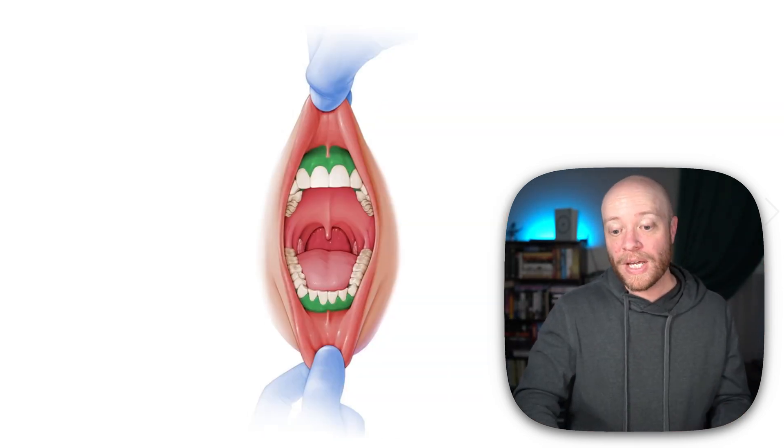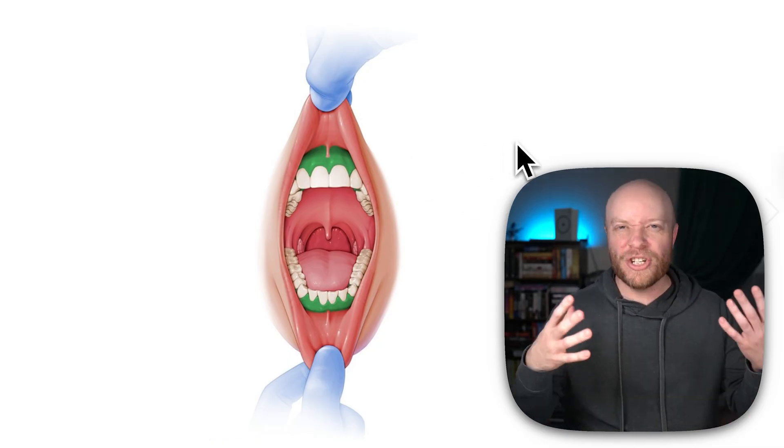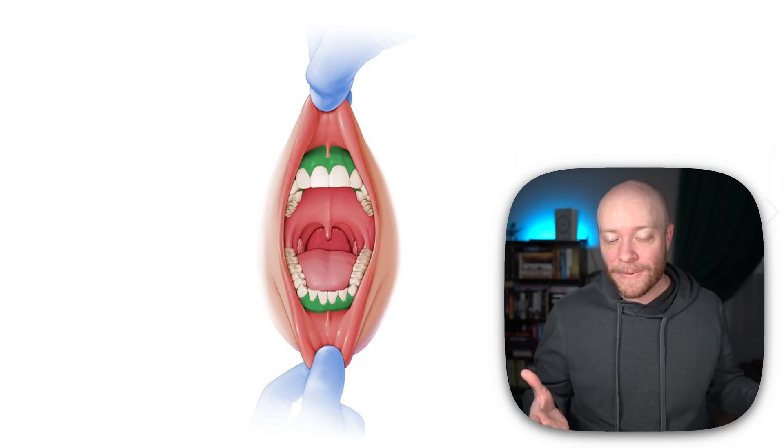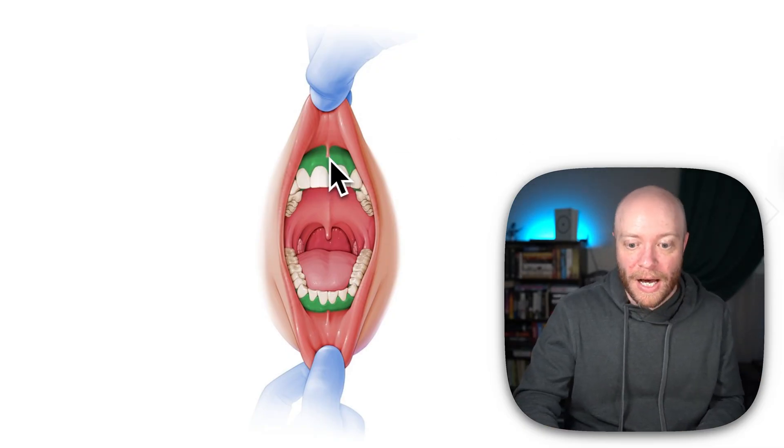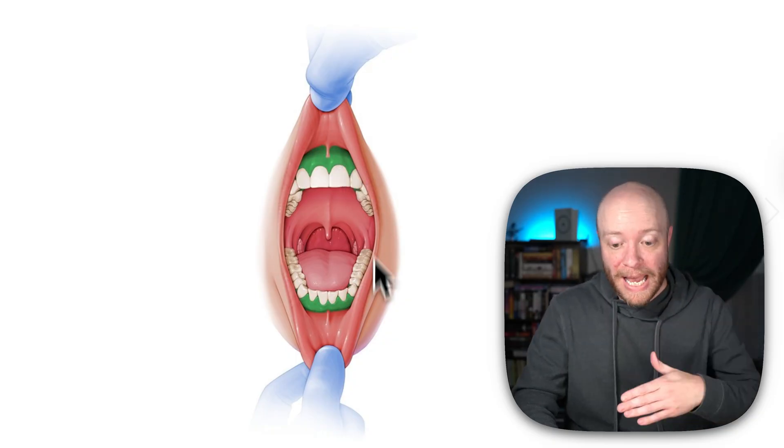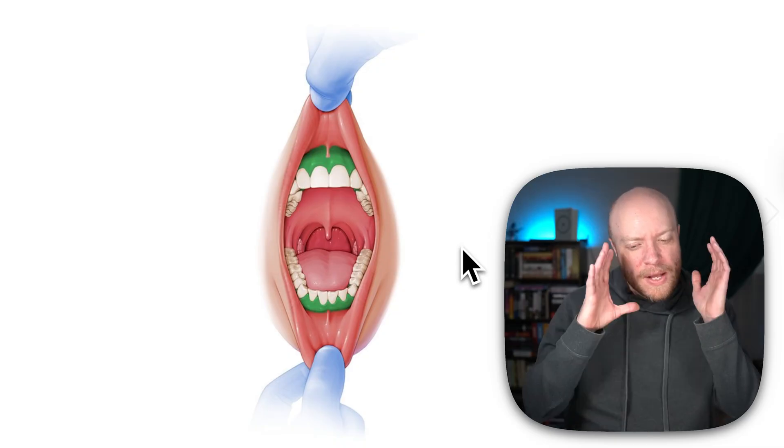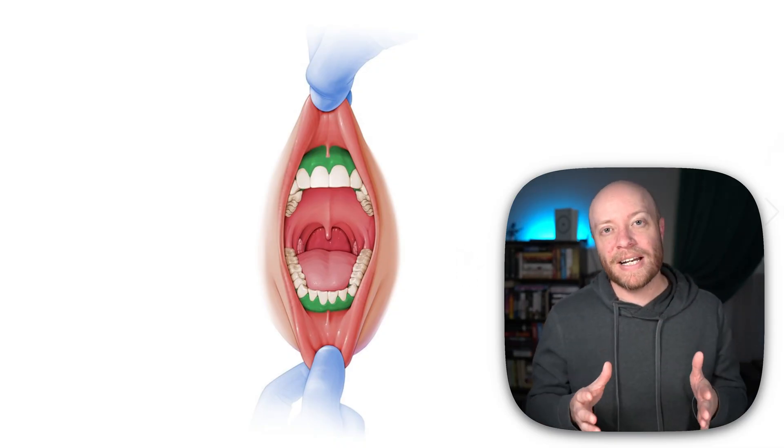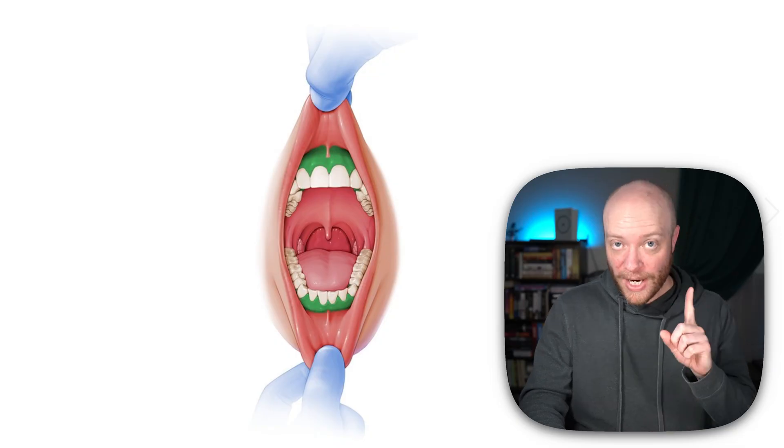You also then have the gingiva. A lot of people have heard of the gingiva before because they've heard of gingivitis. This is just your gums. This is soft tissue lining just above and below those teeth, because we have the upper teeth and then the lower teeth. The teeth would also be included inside of the oral cavity, we just aren't particularly highlighting them right here right now.